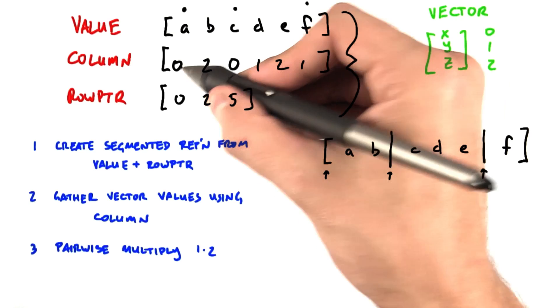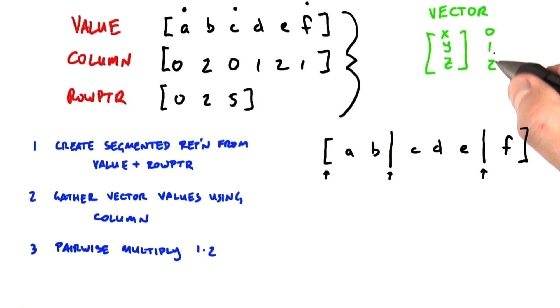So what we're going to do is use these column indices to gather from this vector, and that's going to give us the following array.